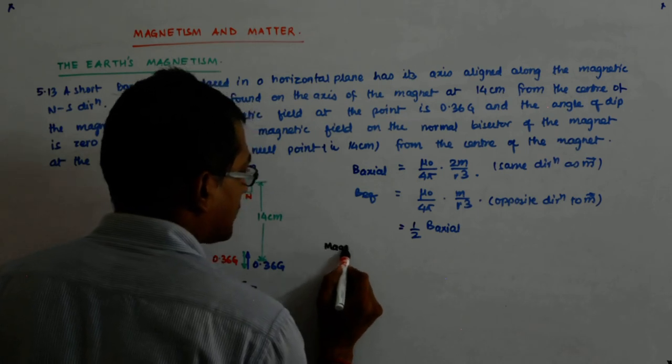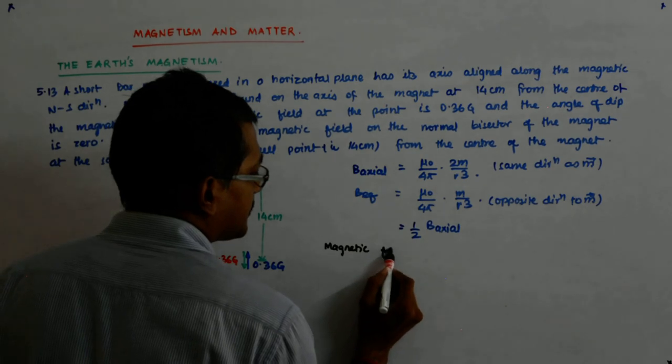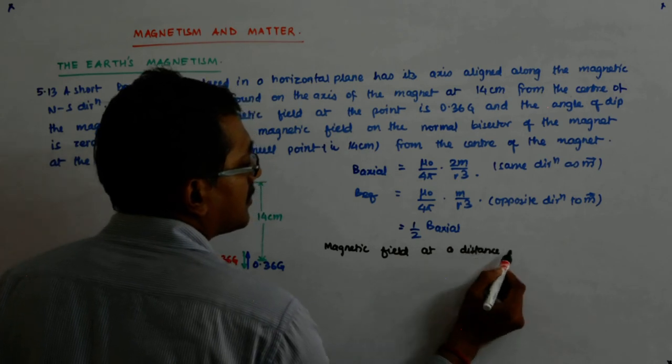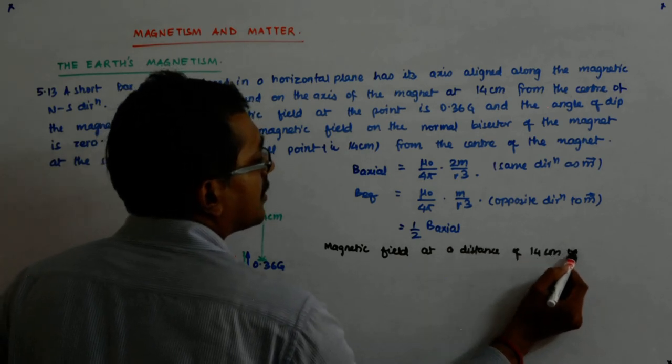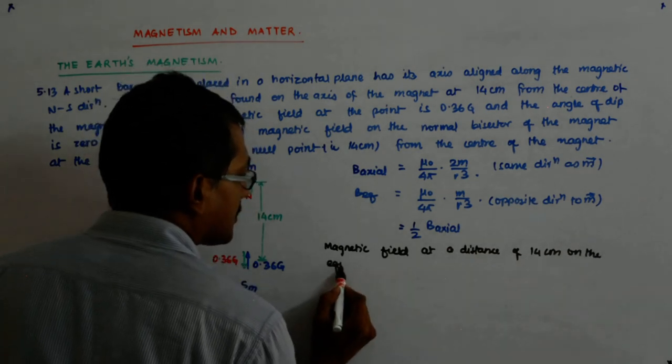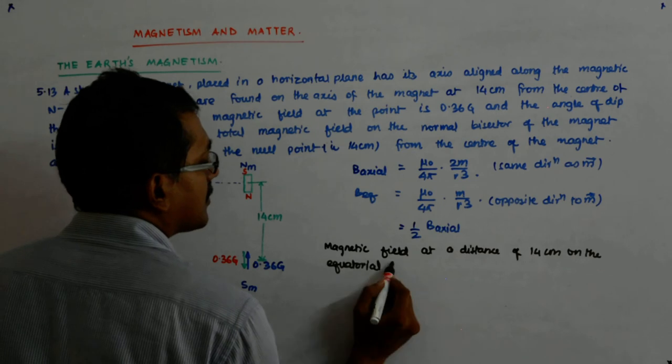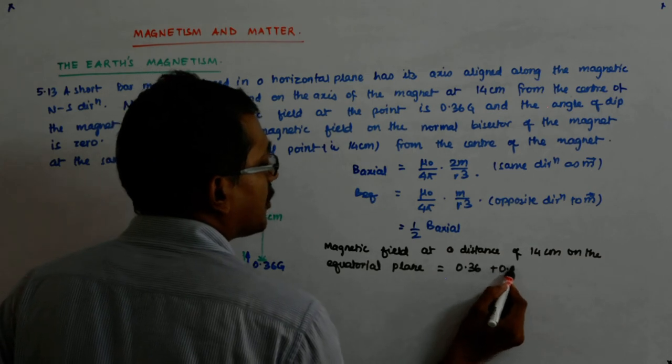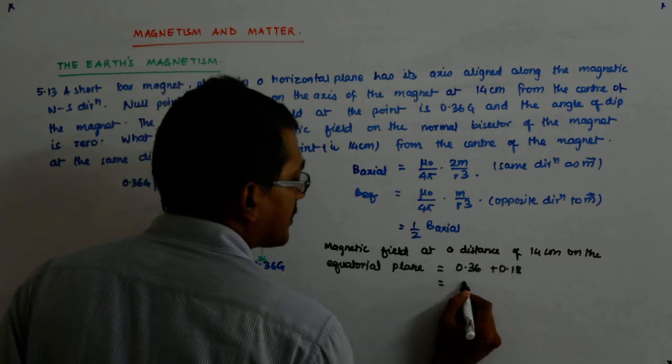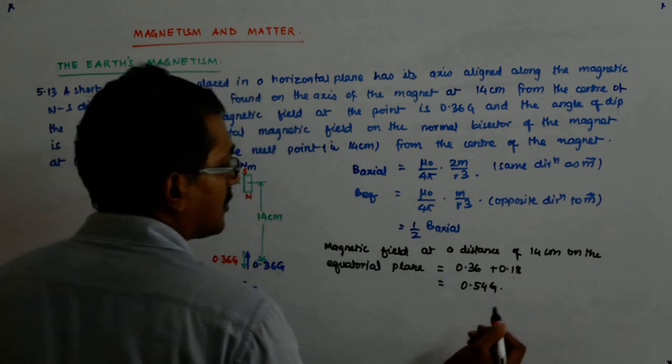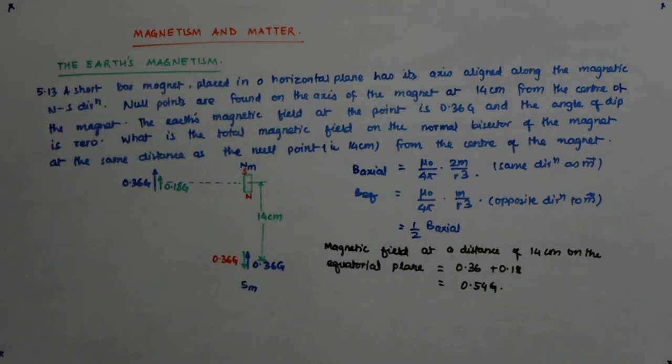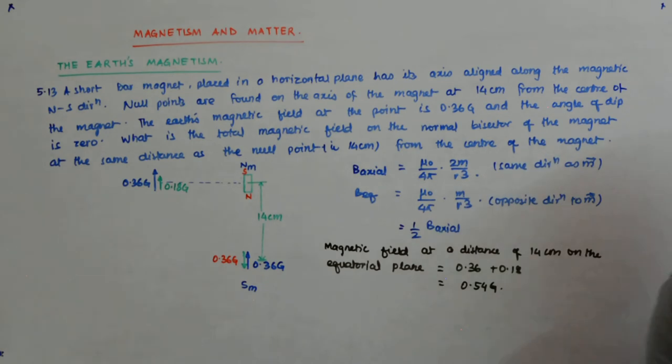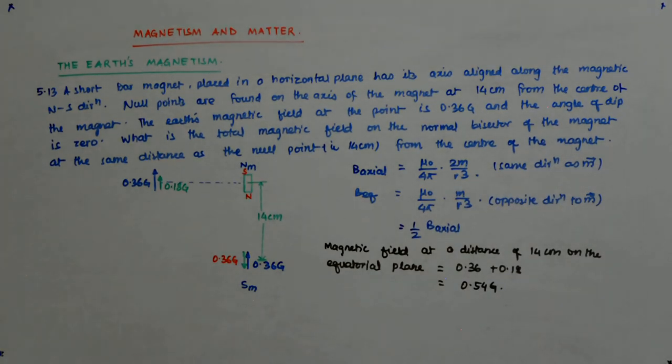So the magnetic field at a distance of 14 centimeters on the equatorial plane. So you see that?